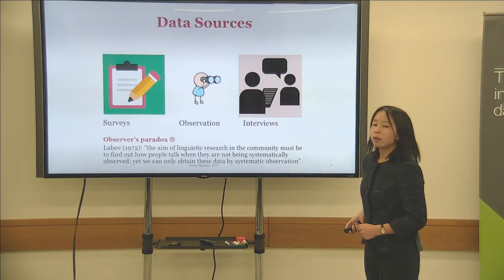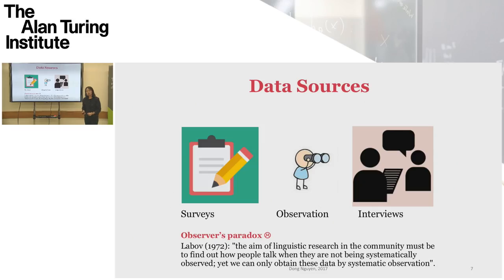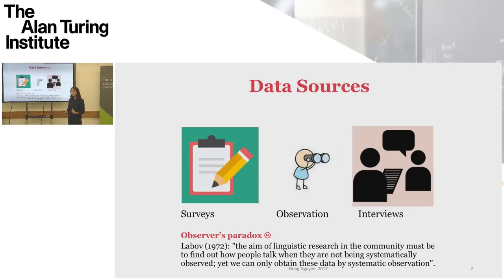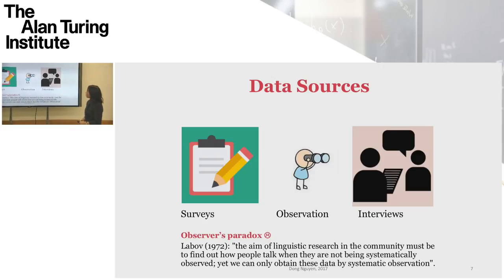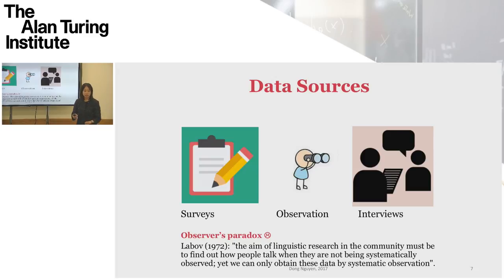Another problem is the observer's paradox. A lot of times you're interested in when people are talking in an informal way, for example, with family or friends. But if you are asking people through surveys or in interviews, you have the risk that they adapt their answer to what they think the researcher likes to see. So that's also a big problem with these kinds of research methods.